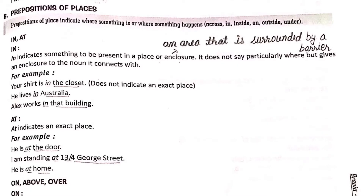For example: 'Your shirt is in the closet.' The closet has many partitions and cabinets, but it has not been specified which cabinet the shirt is in — just that it is in the closet. Similarly, 'He lives in Australia' — it doesn't mention which state, just that he lives in Australia.